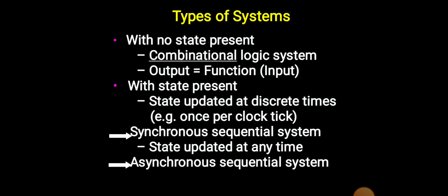Types of systems. With no state present: combinational logic systems. With state present: state updated at discrete times - synchronous sequential system. State updated at any time - asynchronous sequential system.